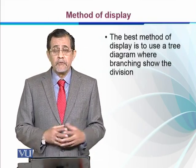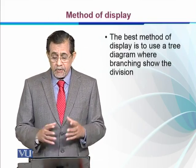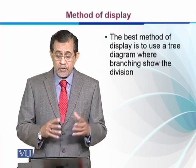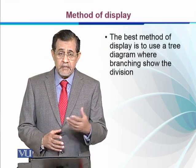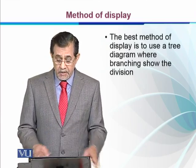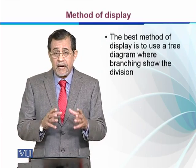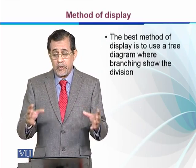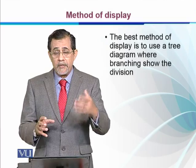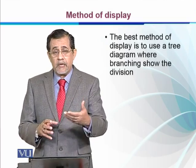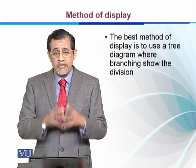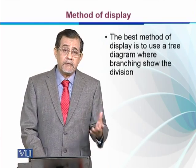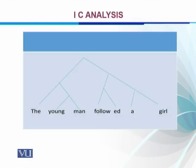The best method to display is to use a tree diagram where the branching shows the division. As we have seen previously, in IC analysis the constituents are also shown other than brackets through the tree diagram. But this tree diagram is very simple in its display.